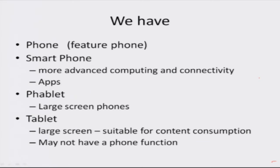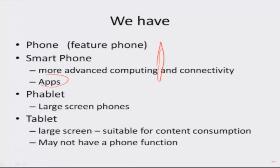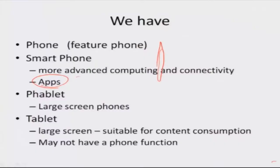We know that there are phones and there are smartphones. So what is the difference between a phone and a smartphone? A smartphone typically is an advanced computing device. It has what we call apps. Apps is an acronym for applications — it can run small programs. Anybody in the world can program apps, which are loaded into the smartphone and can be executed. It also has advanced computing and connectivity features, like Wi-Fi and so on.